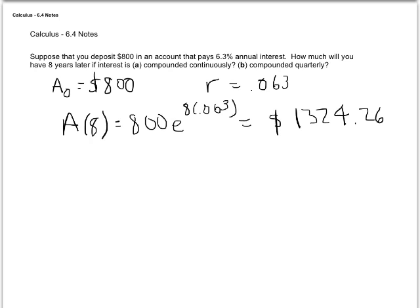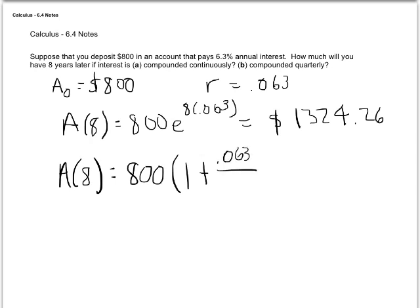What if it's compounded quarterly? Using the compound interest formula, eight years later we have 800 times the quantity 1 plus 0.063 divided by 4, raised to the power of 4 times 8. That's 1 plus the interest rate divided by the number of compounding periods per year, raised to total number of compounding periods. When you punch that into your calculator, after eight years at this interest rate compounded quarterly, you'd have $1,319.07.